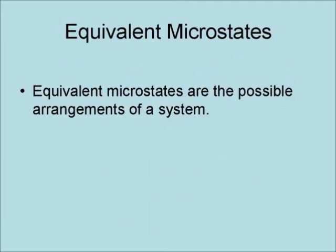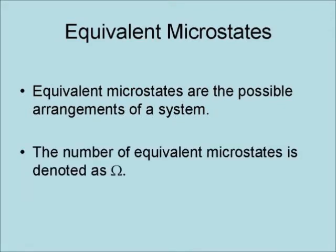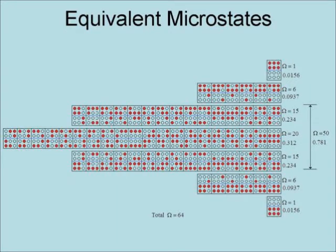Equivalent microstates are the possible arrangements of a system. The number of equivalent microstates is denoted as omega. This illustration shows the breakdown of possible microstates of a system of this type. In this case, the total number of possible microstates is 64. Note that the most ordered states, of which there are two, each have an omega of 1, with both of them having a combined omega of 2, such that the probability of one of them occurring is 3.12%.